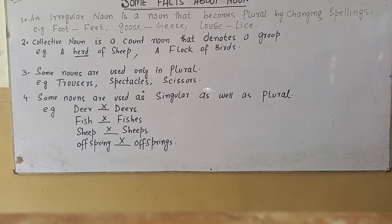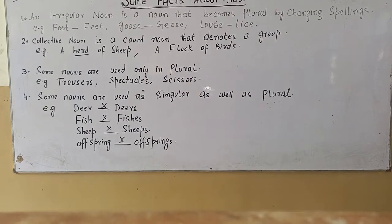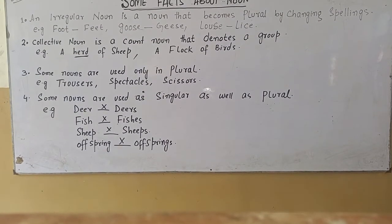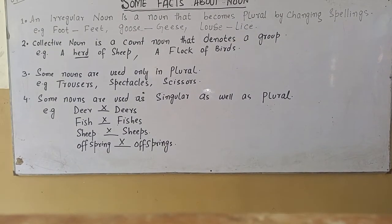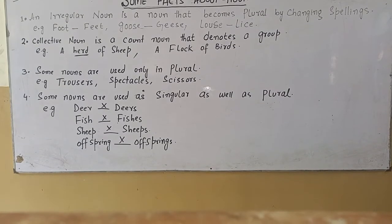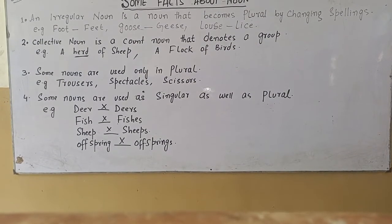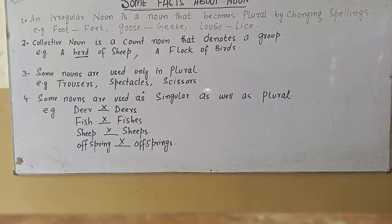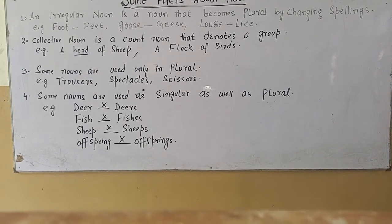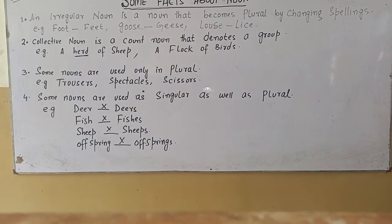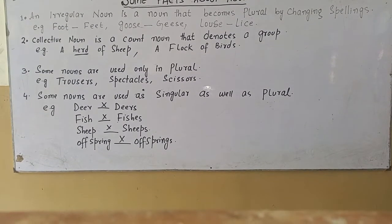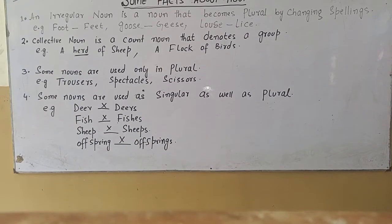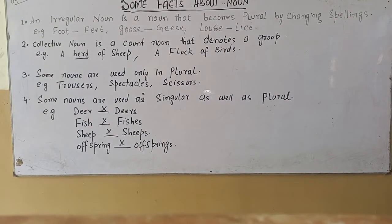Fact number four, some nouns are used as singular as well as plural. For example, deer — not deers, fish — not fishes, sheep — not sheeps, offspring — not offsprings.